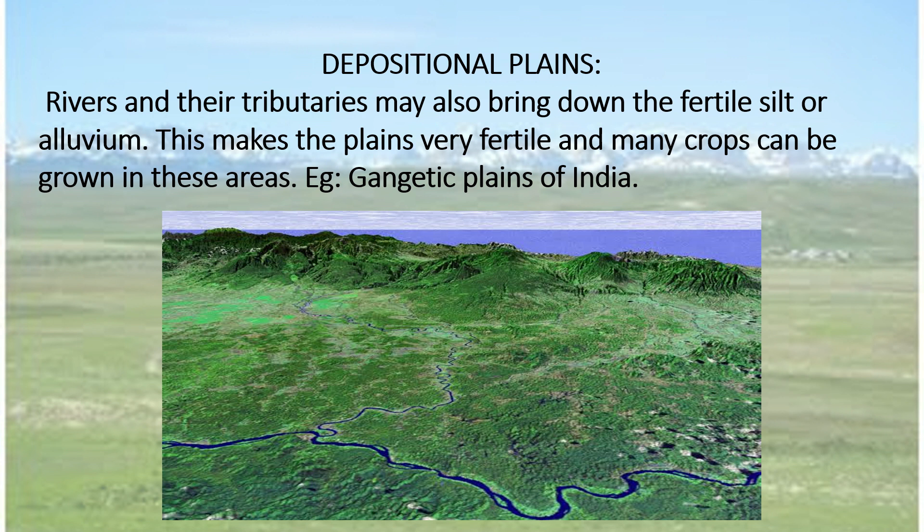Sometimes rivers and their tributaries may bring down fertile silt or alluvium from the mountains. When it comes down to the plains, it starts overflowing or flooding. Then it drops all the silt that it has brought into the land. When this happens, the water recedes — it has gone back to flowing like a river again — but the soil remains on land. This creates the depositional plains, because the river has now deposited its load, like the Gangetic plains of India.